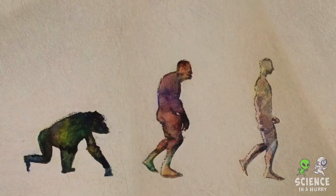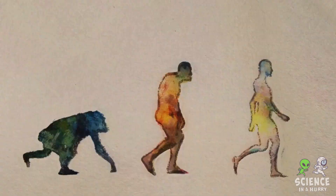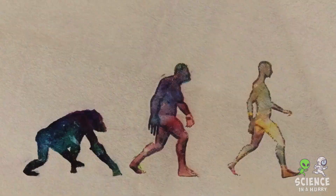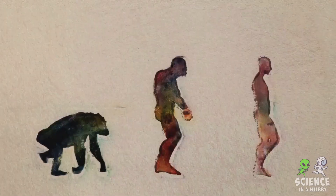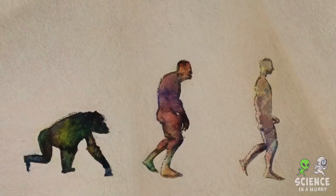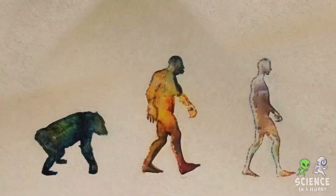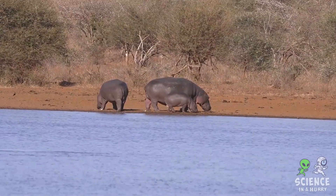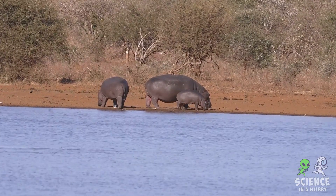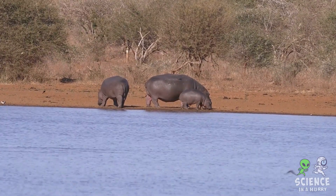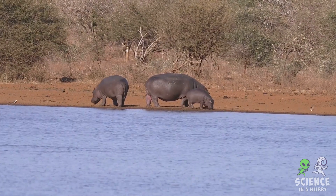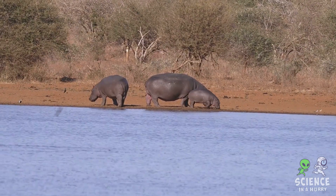There are three key principles that underpin this theory: variation, inheritance, and high rate of population growth. Variation implies that no two individuals in a species are exactly alike — they each have distinct traits.